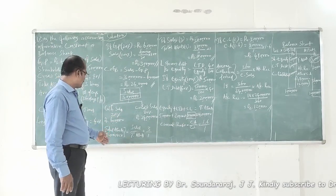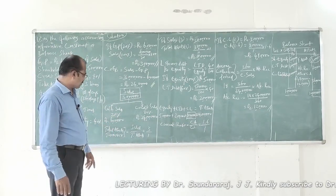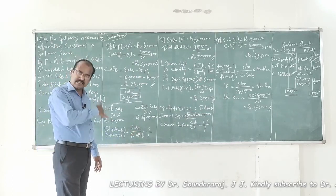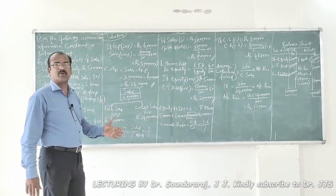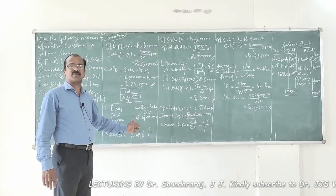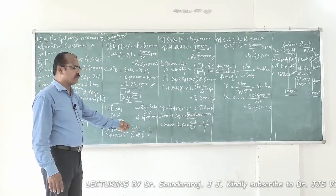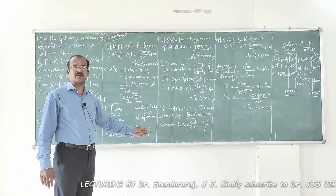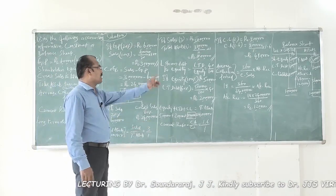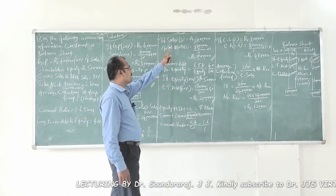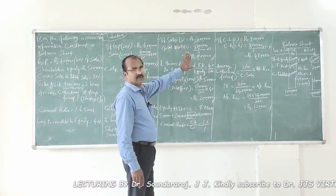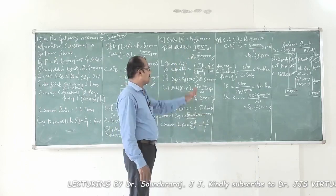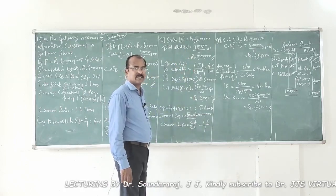Now let's get into the next ratio: total assets turnover ratio. Since the problem has directed us to use sales as the basis, the formula is sales divided by total assets equals 3 by 1. If sales with a weight of 3 equals 30 lakhs, then total assets with a weight of 1 equals 10 lakhs.